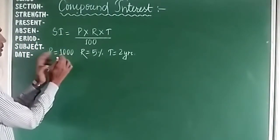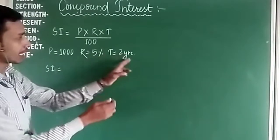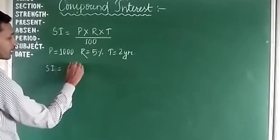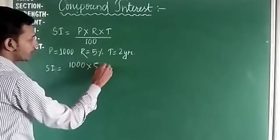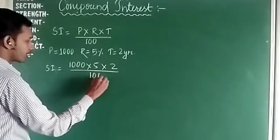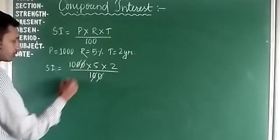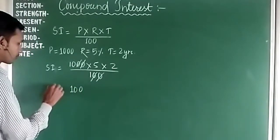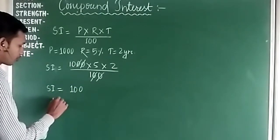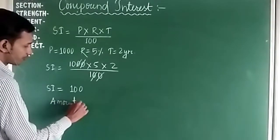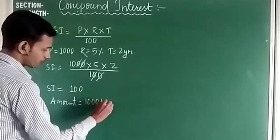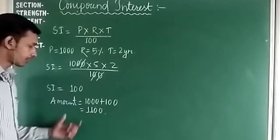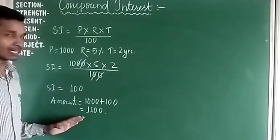Suppose the principal is 1000, the rate is 5%, and the time is 2 years. For simple interest, SI equals 1000 into 5 into 2 divided by 100, which gives us 100 rupees. So the amount after two years for simple interest will be 1000 plus 100, which equals 1100 rupees.